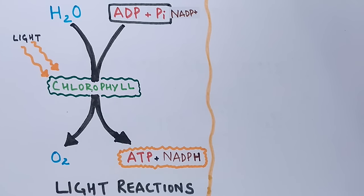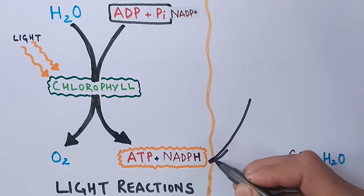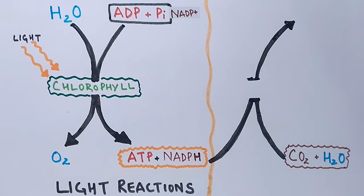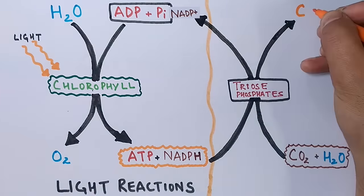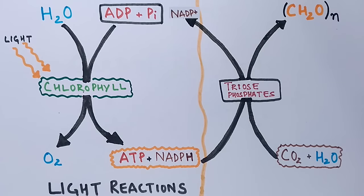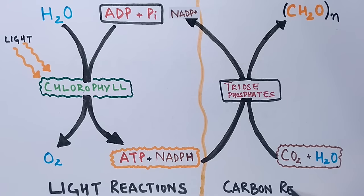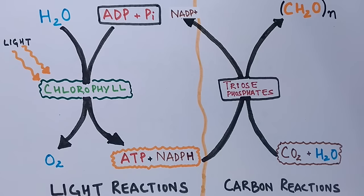After the light reactions, the carbon dioxide molecule is fixed, and the ATP and NADPH produced during the light reactions are used here. NADPH reduces the carbon dioxide molecule into triose phosphates, which ultimately transform into carbohydrates. The reactants ATP and NADPH are used, and we get ADP and NADP+ back again — returning to where the reaction started. This is how the light reactions and light-independent carbon reactions occur in the chloroplast.